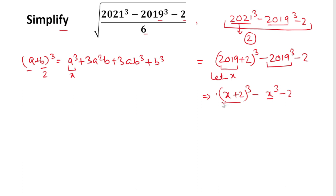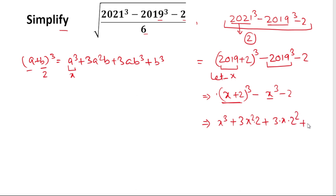Now we will apply the (a+b)³ formula. In place of a it is x, so we get x³ plus 3x² times 2, plus 3 times x times 2², plus 2³, and then we subtract x³ and subtract 2.